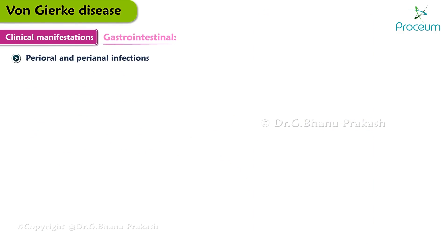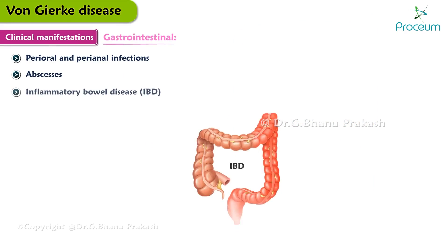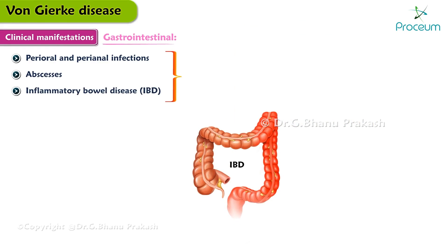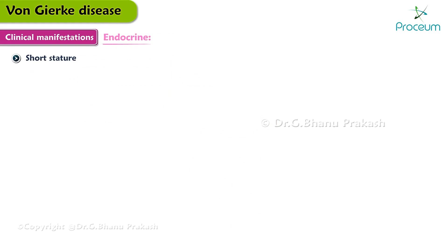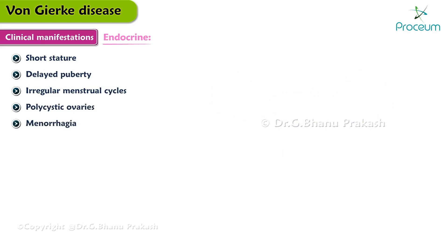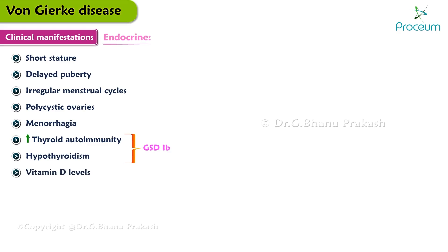Regarding gastrointestinal manifestations, perioral and perianal infections, abscesses, and inflammatory bowel disease, or IBD, are common in GSD-1B. IBD can also occur in GSD-1A and may be underrecognized. There are also endocrine manifestations: short stature is common if patients are not appropriately managed. Puberty is often delayed and menstrual cycles are frequently irregular. Polycystic ovaries and menorrhagia have been observed. An increased prevalence of thyroid autoimmunity and hypothyroidism have been reported in patients with GSD-1B, and vitamin D levels are often low.